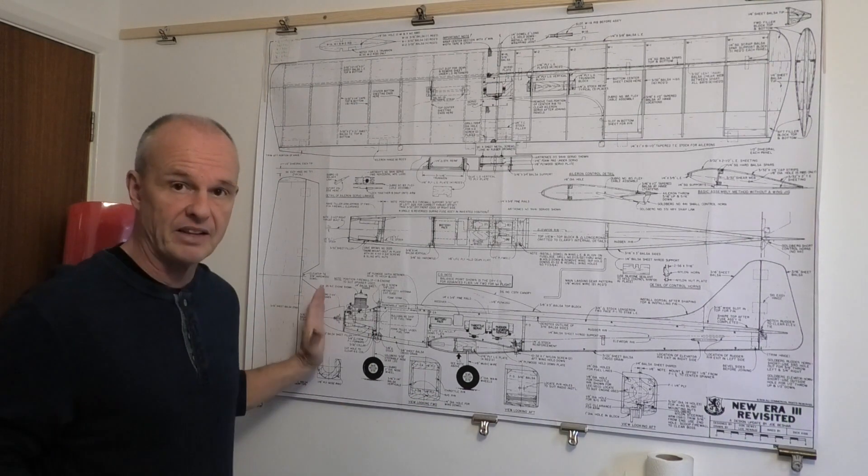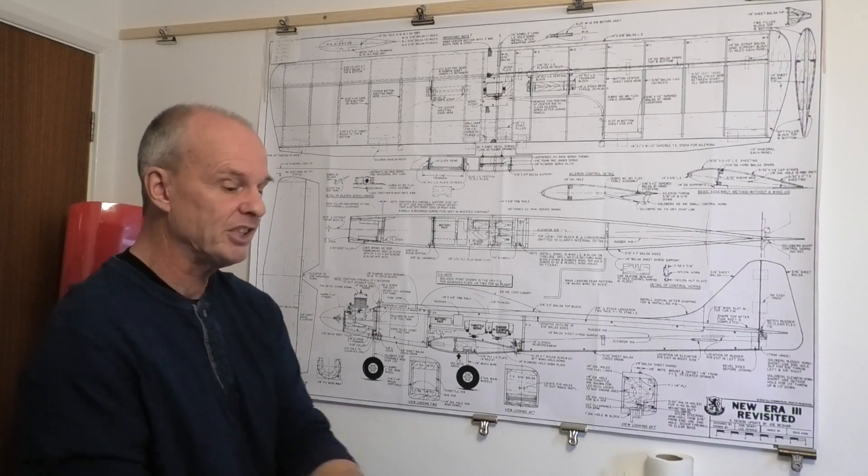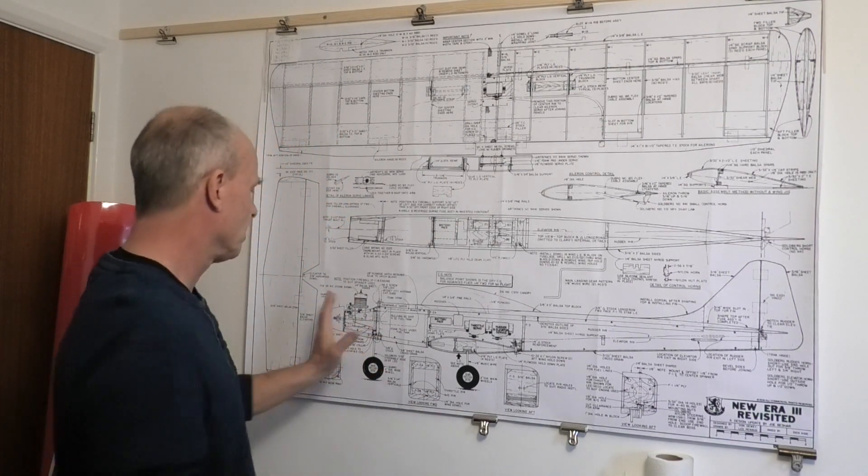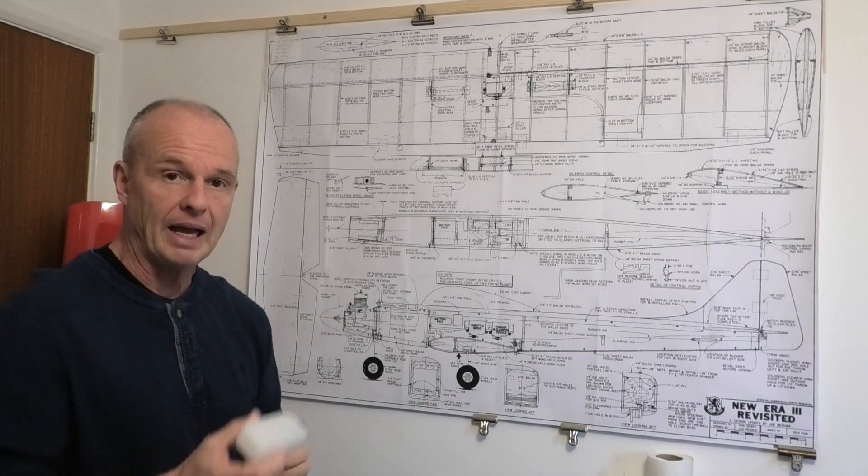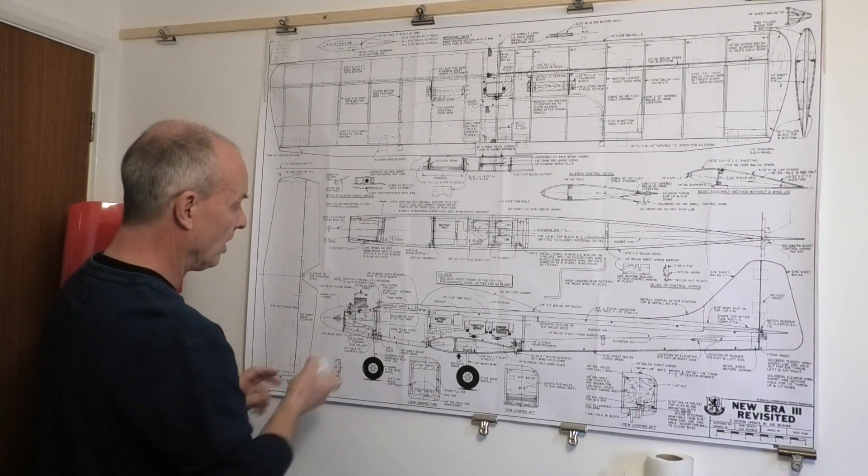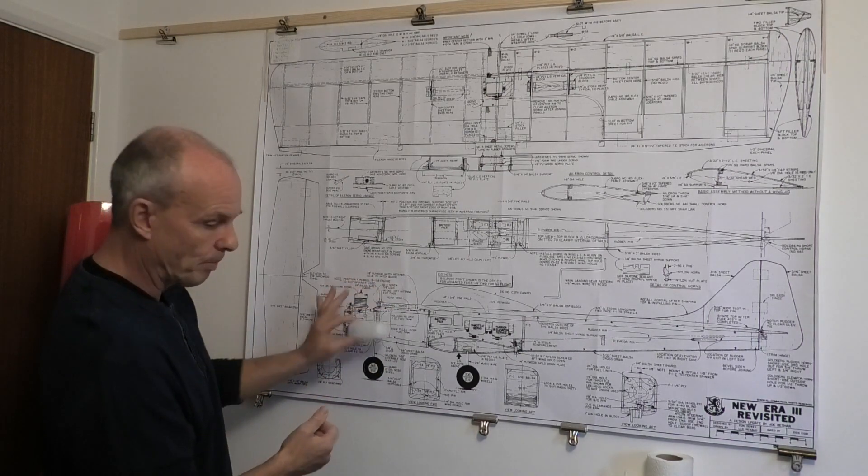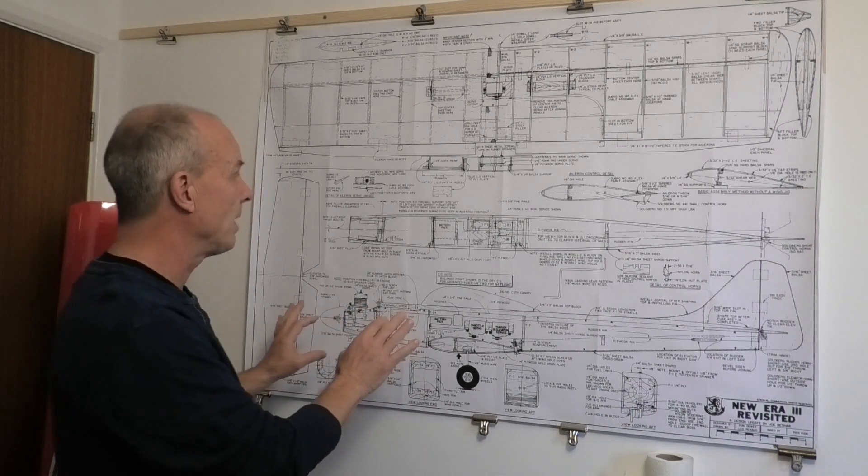I don't want to just extend the nose because I don't want to alter the CG potentially, but also alter the look of the plane. So I'm just going to balance that out a little bit. I'm using a four-ounce fuel tank, plenty of room in there for movement back if I alter the firewall.